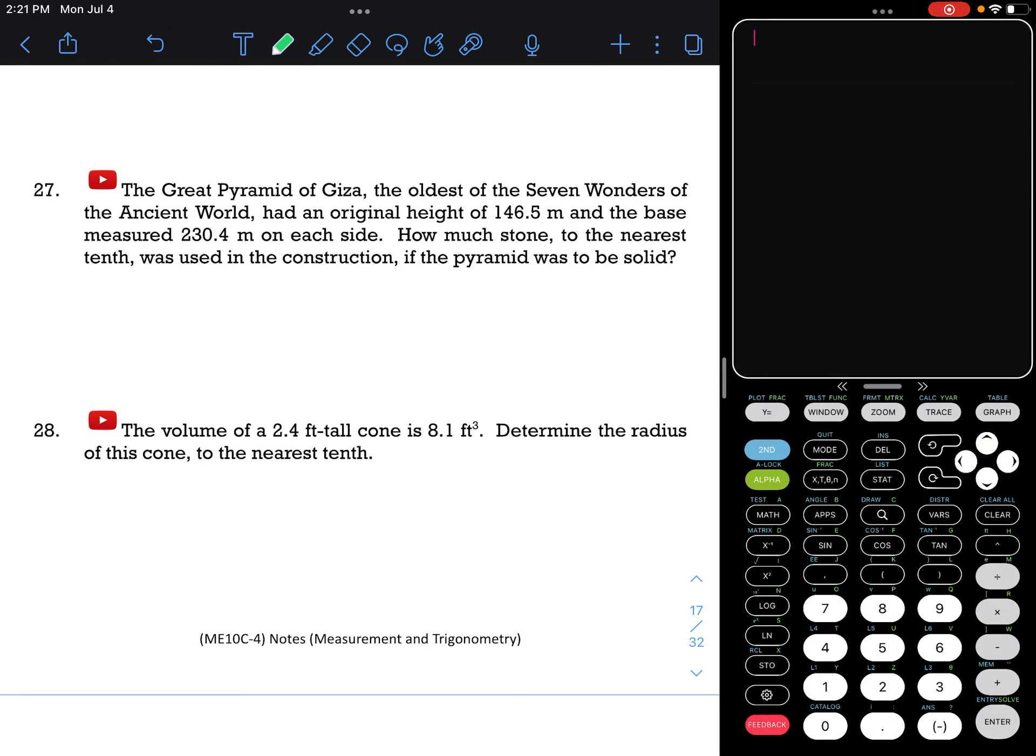So here we're talking about the outside and the inside, which means it's a volume question. We're dealing with a pyramid, and we have a height of 146.5 meters, and we also have a length and a width—they're the same—of 230.4 meters.